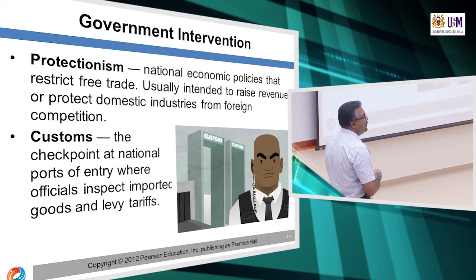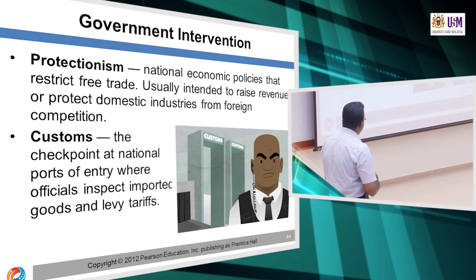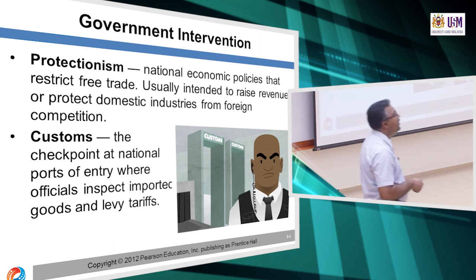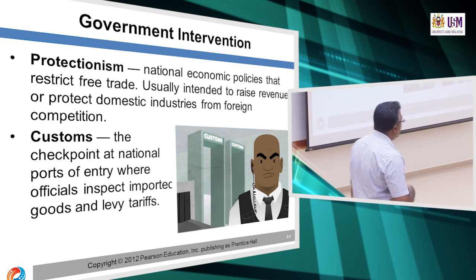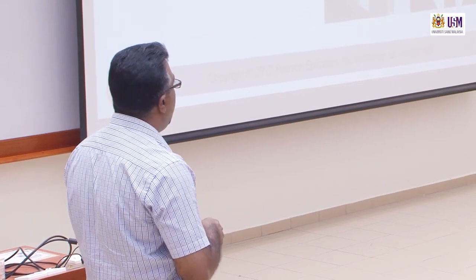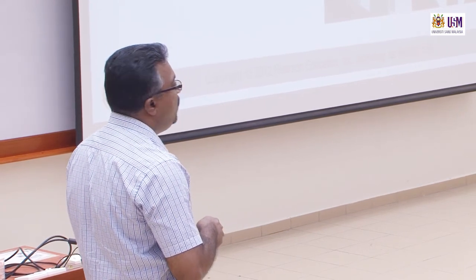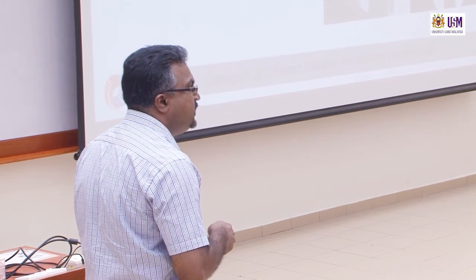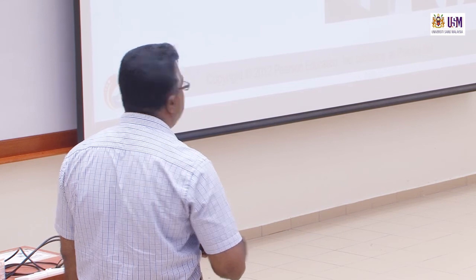Another instrument is customs — the checkpoint at national ports of entry where officials inspect imported goods and levy tariffs. Even at customs, they can make the process very difficult for cars or any products coming into the country. They may have a lot of red tape, checkpoint inspections, and procedures that act as a barrier for international trade.